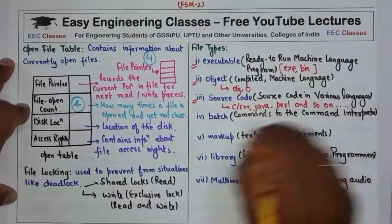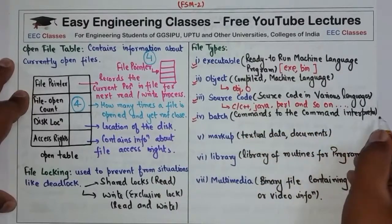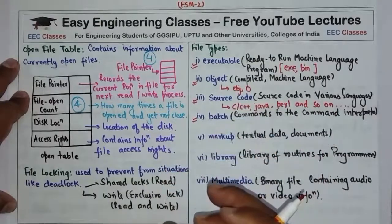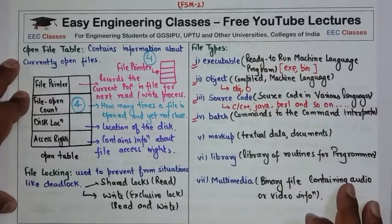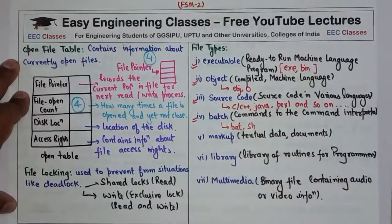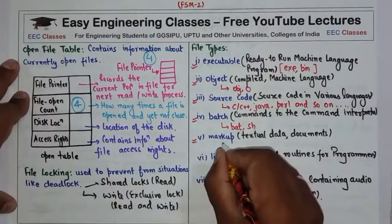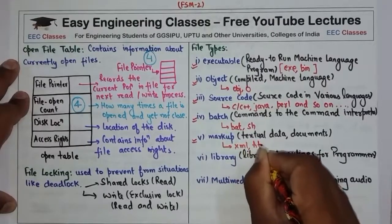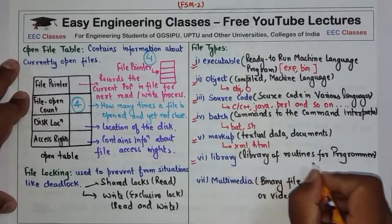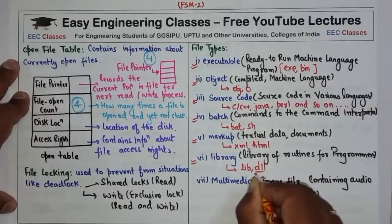Depending on the language you are programming in, you can have different kinds of source code files. Batch files contain commands to the command interpreter — if you want to issue a certain sequence of commands, you can create a batch file and run it directly on the command interpreter. The extension is bat or sh. Markup files are textual data or documents such as XML or HTML. Library files are libraries of routines for programmers, with extensions like lib or DLL.